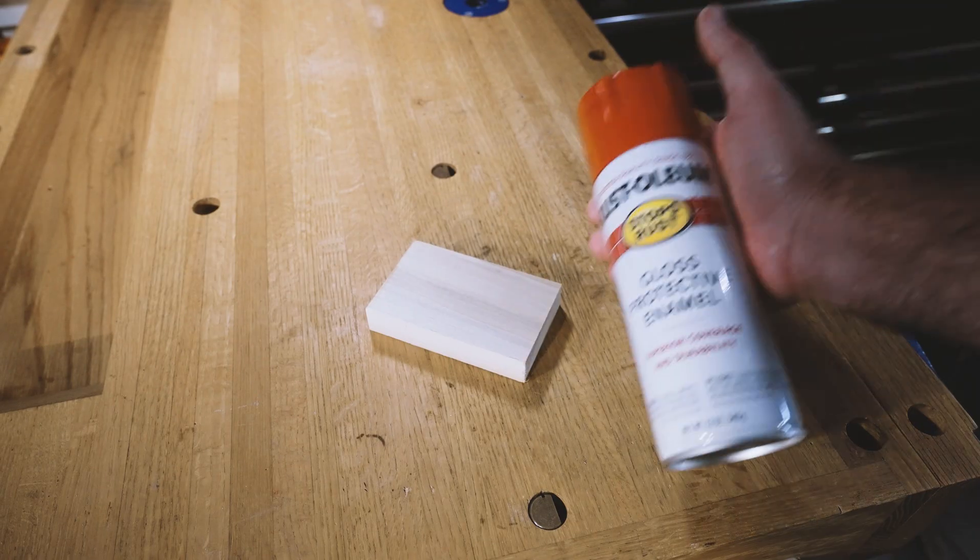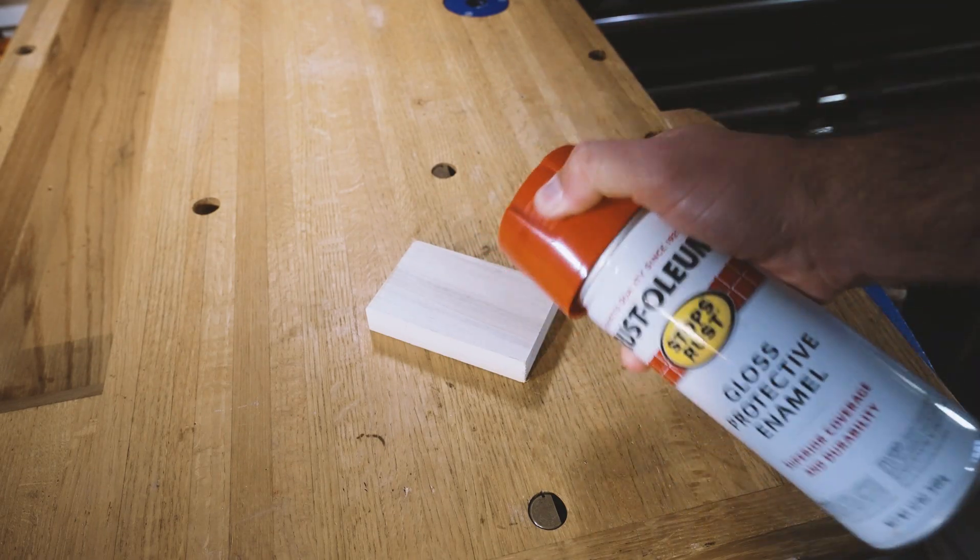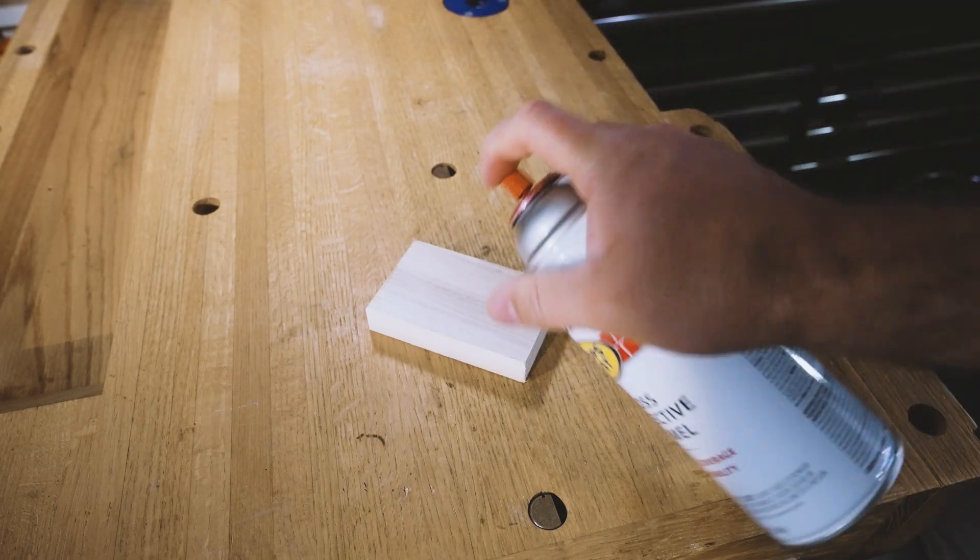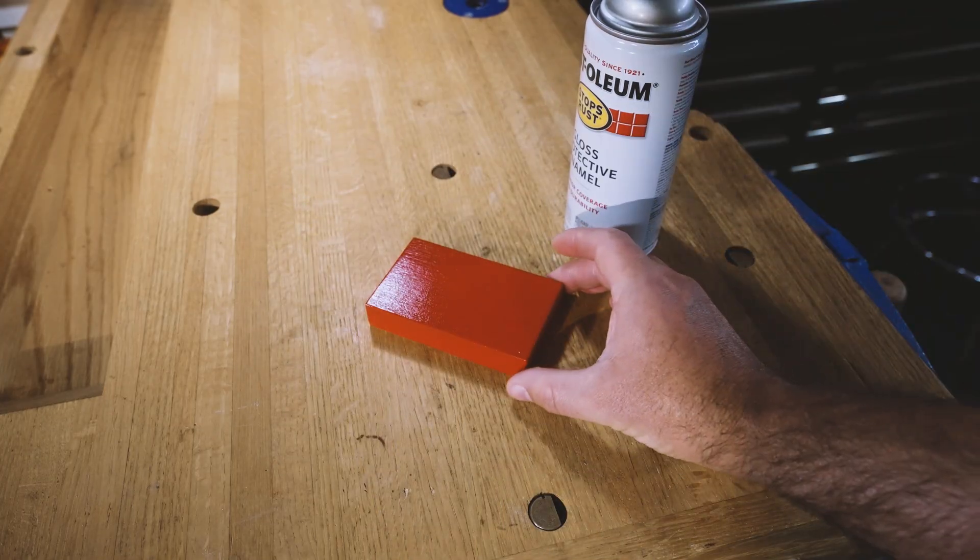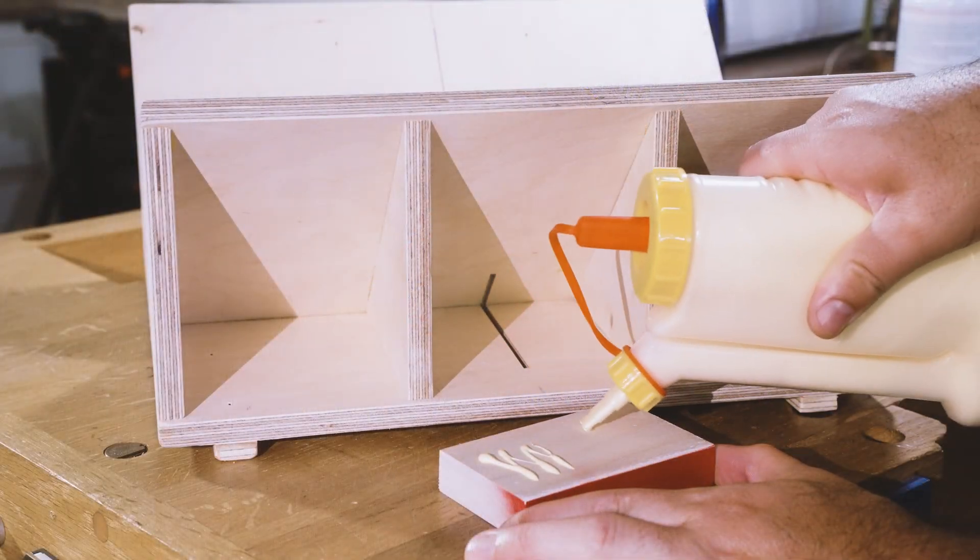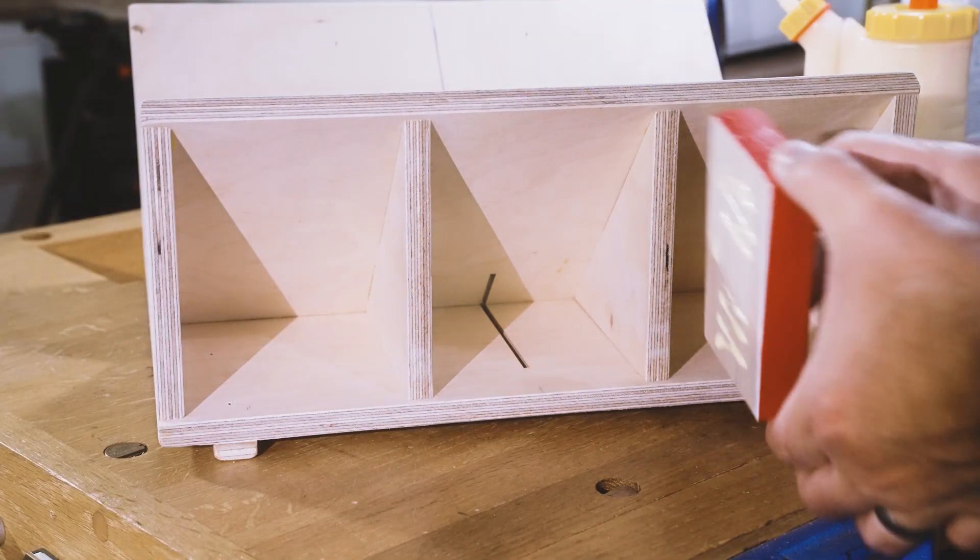I want a permanent reminder to keep my hands away from the back of the jig and also not to cut all the way through it. So I took that little scrap of wood and spray painted it red, and then I glued it to the back of the jig where I want to avoid cutting all the way through with the blade.